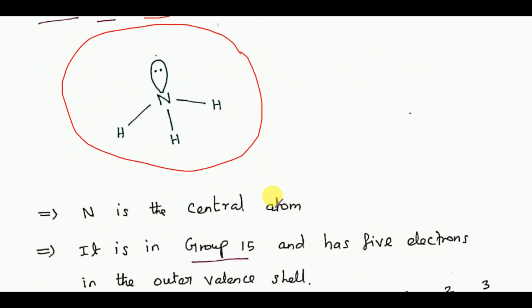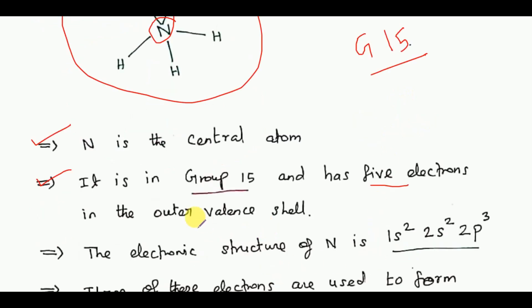Here nitrogen is the central atom. It is in Group 15 and has five electrons in the outer valence shell.